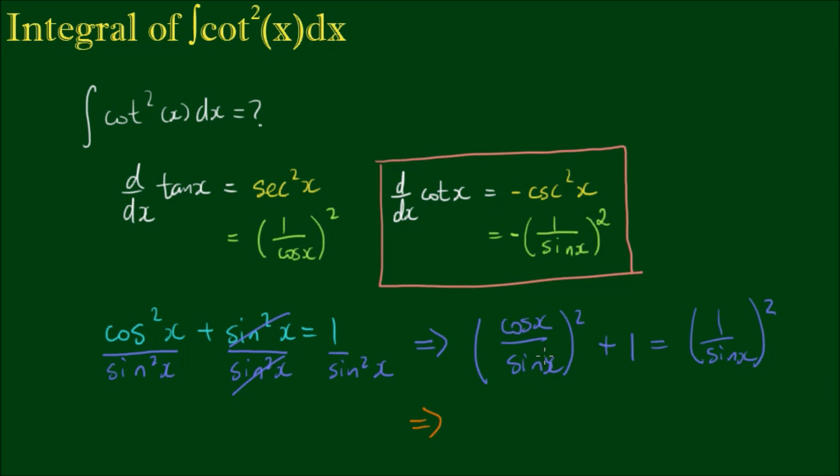Now, cos over sin x is defined as the cotangent. So we have the cotangent of x and it's all squared, so it's cotangent squared x plus 1 equals 1 over sin x is defined as the cosecant. So we have cosecant squared of x.